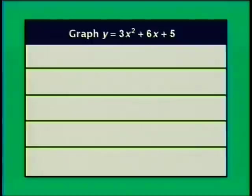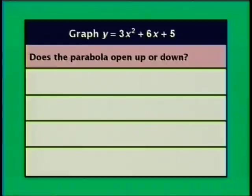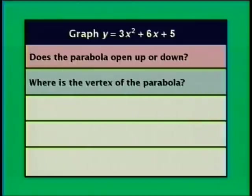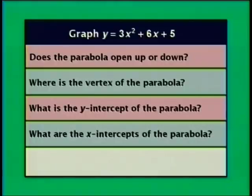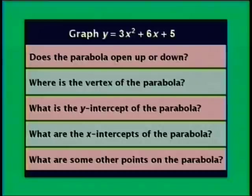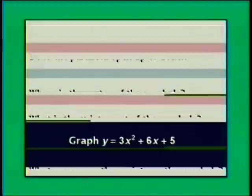To graph y equals 3x squared plus 6x plus 5, we might consider: does the parabola open up or down? What is the vertex? What is the y-intercept? What are the x-intercepts? What are some other points on the parabola? What is the axis of symmetry? These are a lot of questions. I'm going to turn this over to Ann so she can show you several examples of putting it all together when working with parabolas.